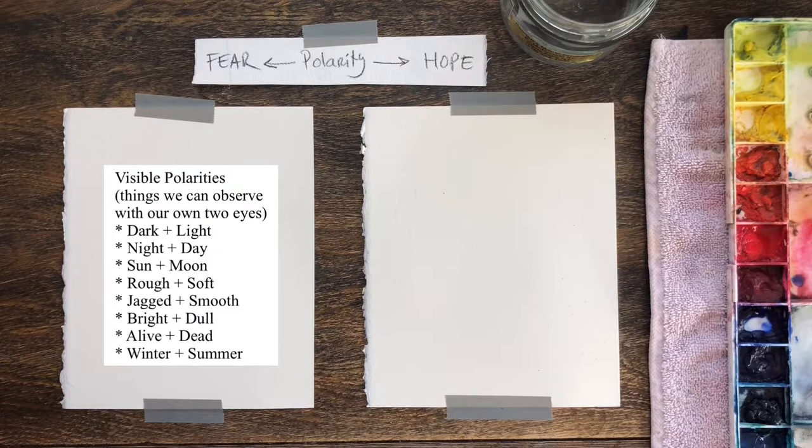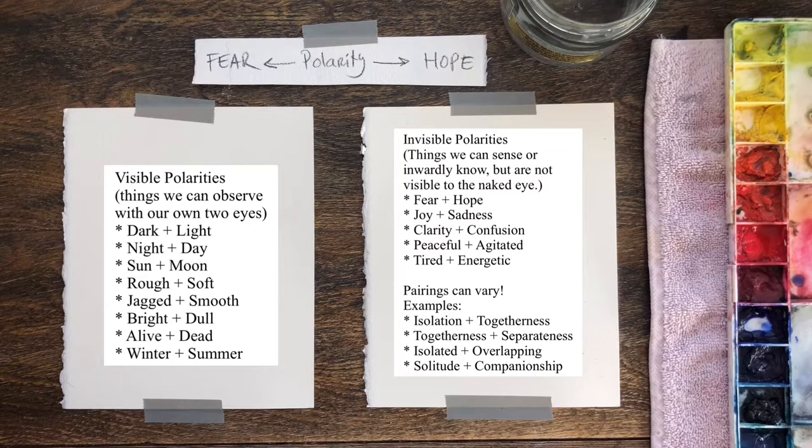The polarity could also be something invisible — something not observable that we have another kind of sense for. That could be something such as what I have here: fear versus hope, or sadness versus joy. Find a word that's meaningful to you and then ask what is the opposite of that word.